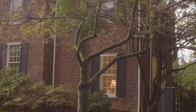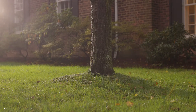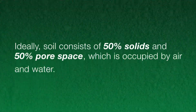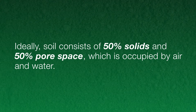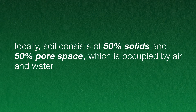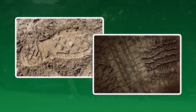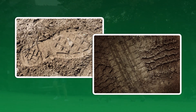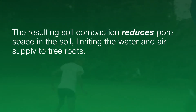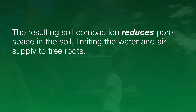Thanks Jim. Trees need fresh air and water just like you, but soil compaction can make this difficult to attain. Ideally, soil consists of 50% solids and 50% pore space, which is occupied by air and water. When foot or vehicular traffic places downward pressure on the soil, it loses this healthy balance. The resulting soil compaction reduces pore space in the soil, limiting the water and air supply to tree roots.